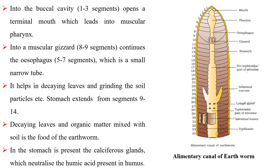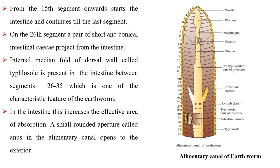The stomach extends from segment 9 to 14. Decaying leaves and organic matter mixed with soil is the food of the earthworm. In the stomach are present the calciferous glands which neutralize the humic acid present in humus. From the 15th segment onward starts the intestine and continues till the last segment. On the 26th segment, a pair of short and conical intestinal caeca project from the intestine. The internal median fold of the dorsal wall called typhlosole is present in the intestine between segments 26 to 35, which is one of the characteristic features of the earthworm.